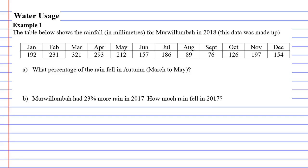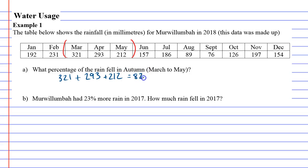Question C can't be seen right now — it'll be on the next video because it takes a long time to solve. Starting with Question A: it says what percentage of the rain fell in autumn. Autumn ranges from March to May, so let's look at that range. We add up the rainfall: 321 plus 293 plus 212.